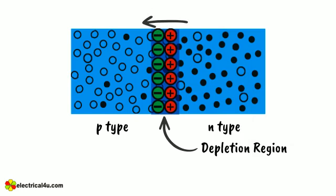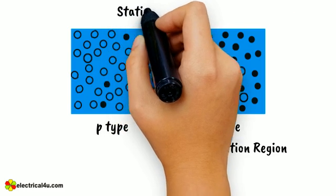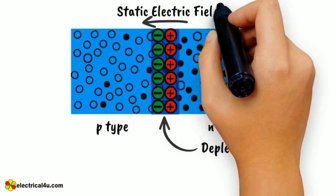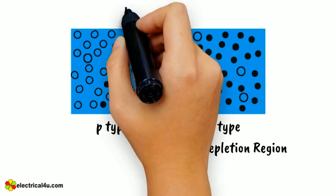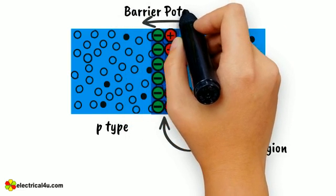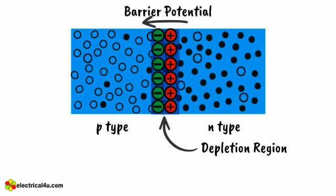Due to the presence of these positive and negative ions, a static electric field called barrier potential is created across the PN junction of the diode. It is called a barrier potential because it acts as a barrier and opposes the further migration of holes and electrons across the junction.